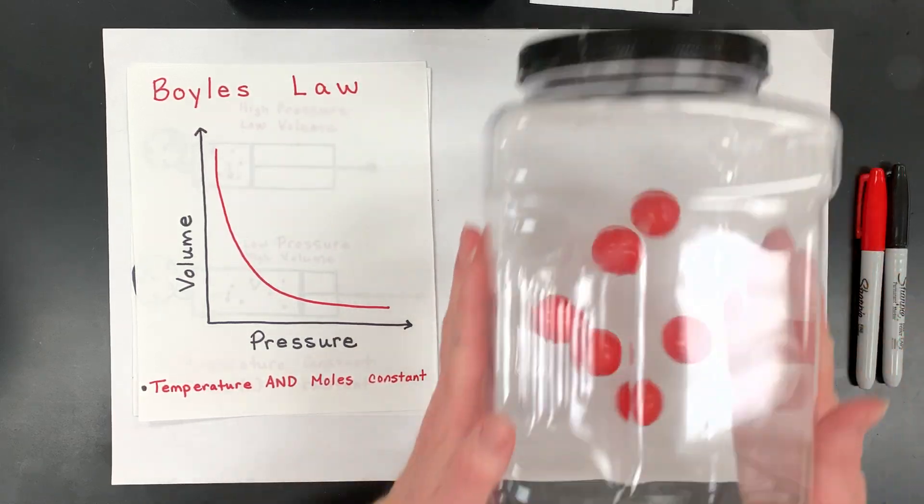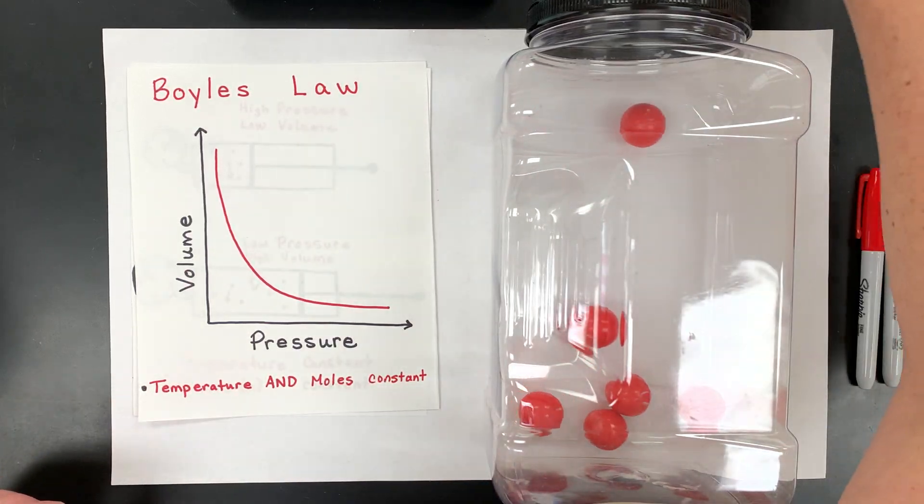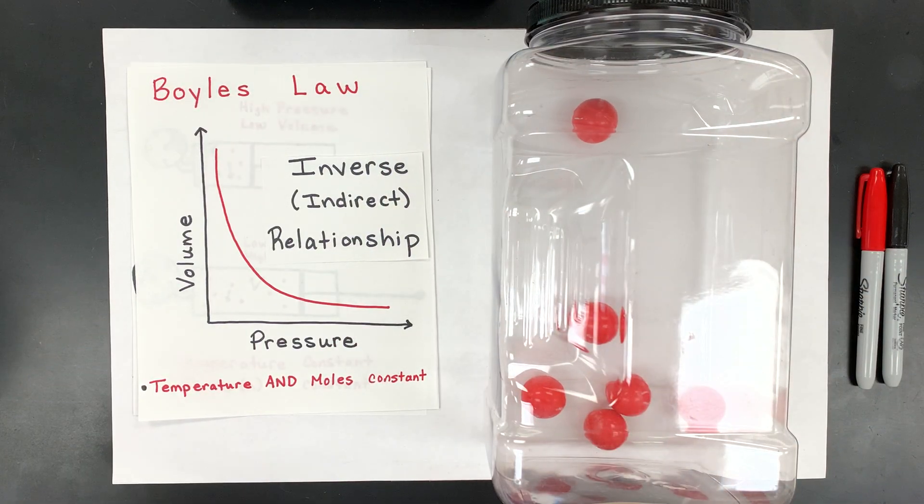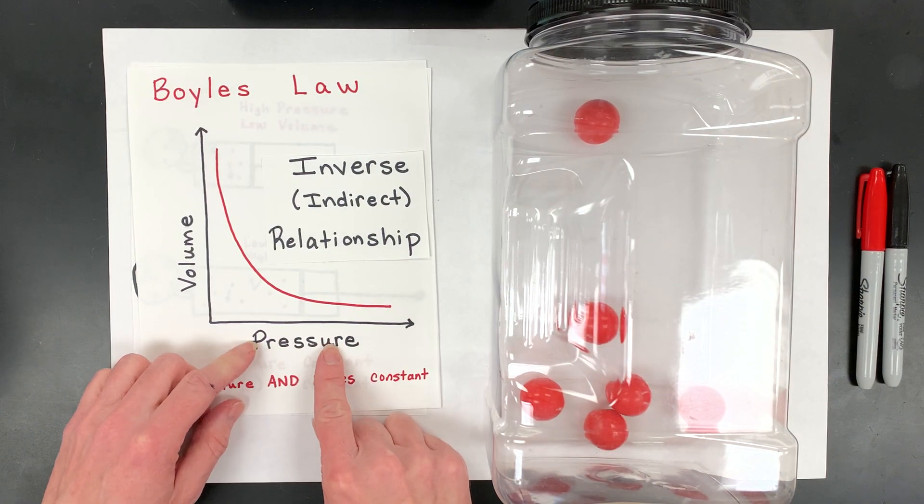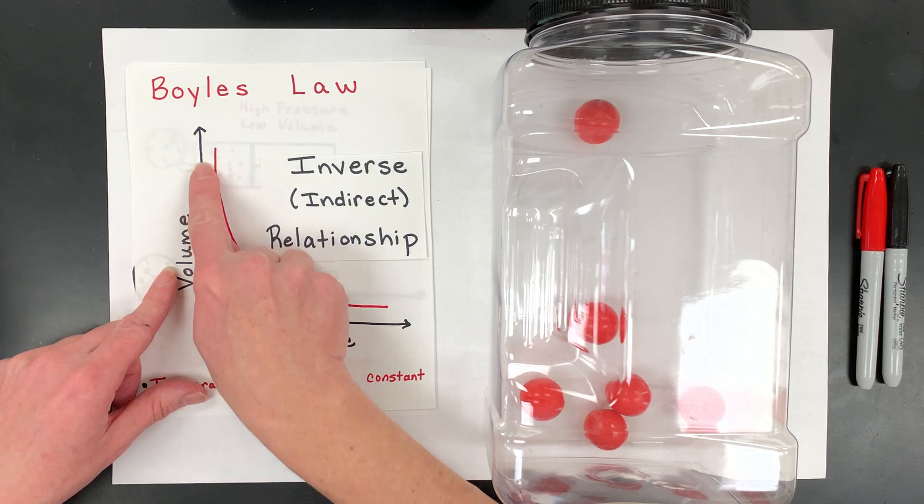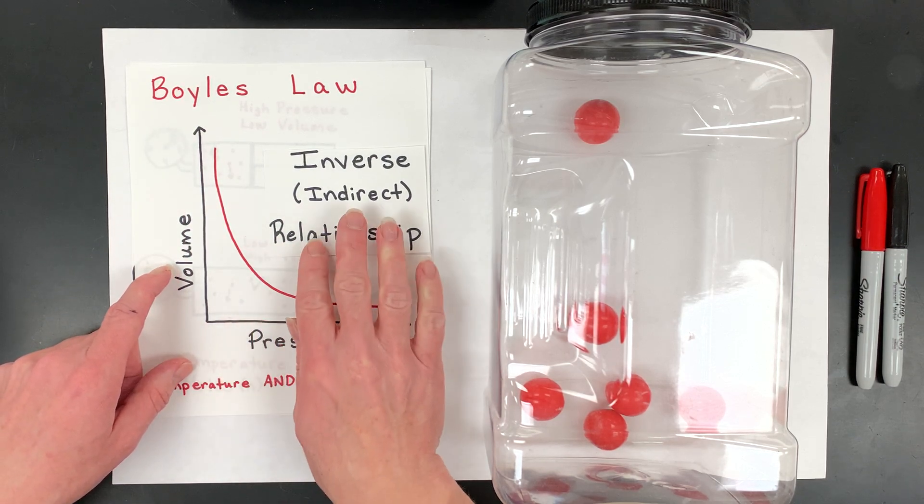So there should be fewer collisions with the walls of the container. And that's what's meant by an inverse or an indirect relationship. It's when what happens to the one variable is the opposite to the other. So again, as the volume went up, my pressure actually went down.